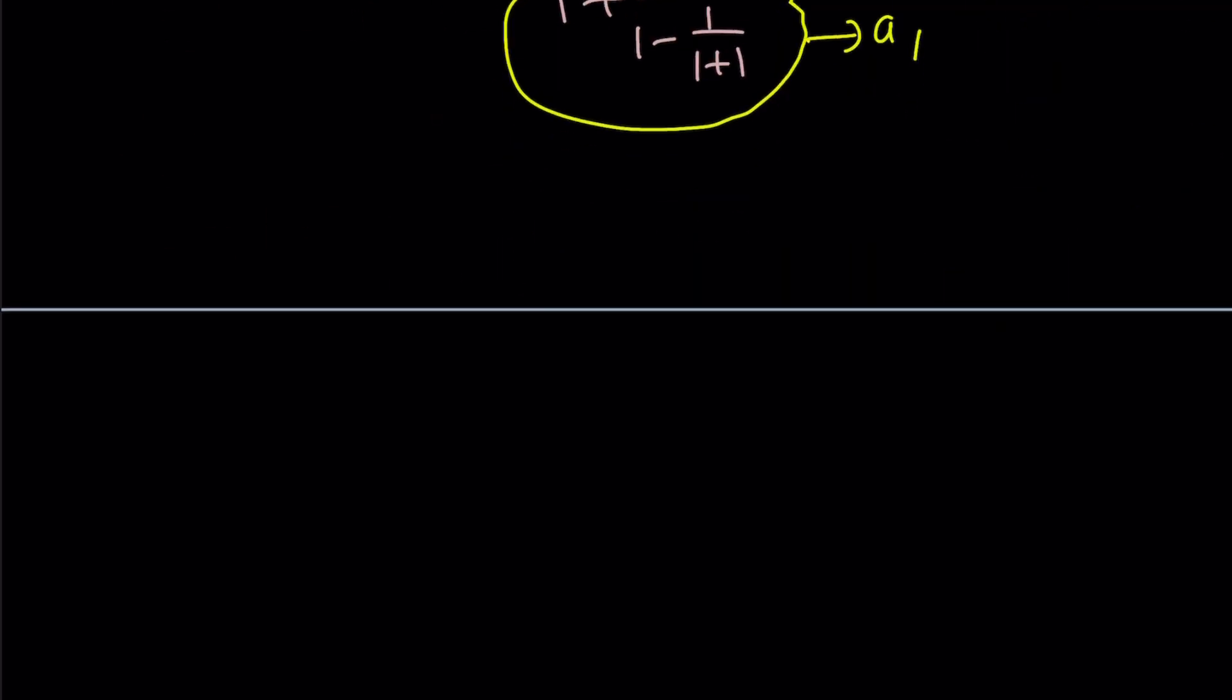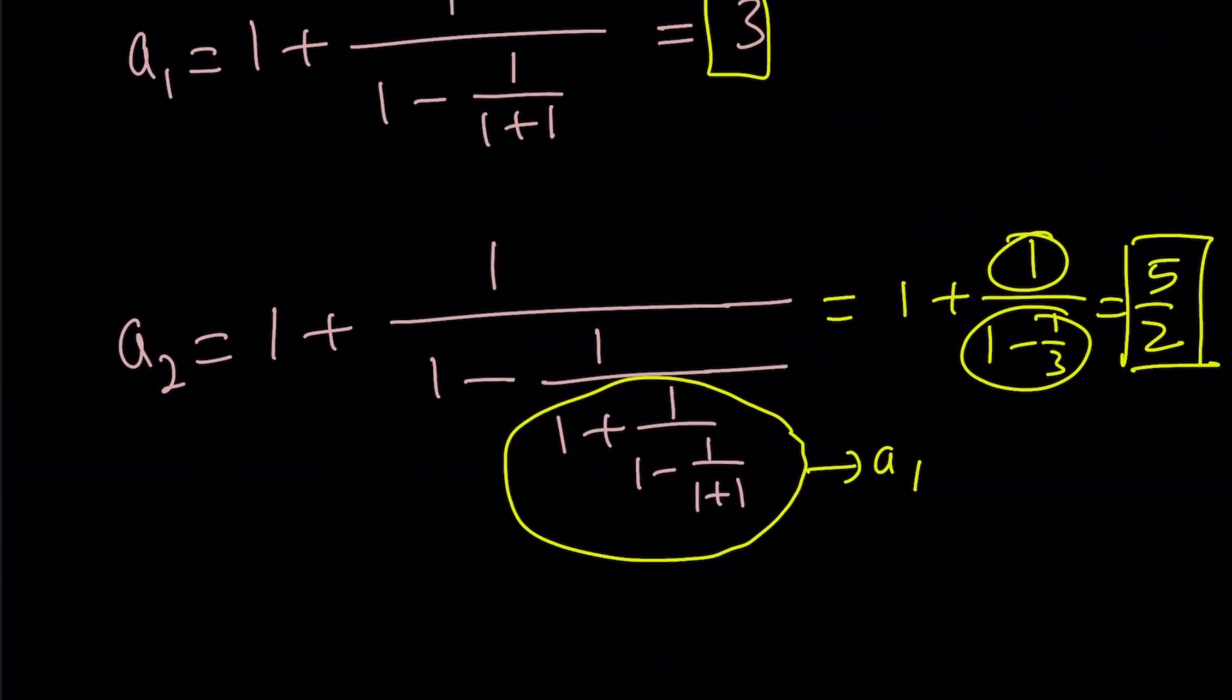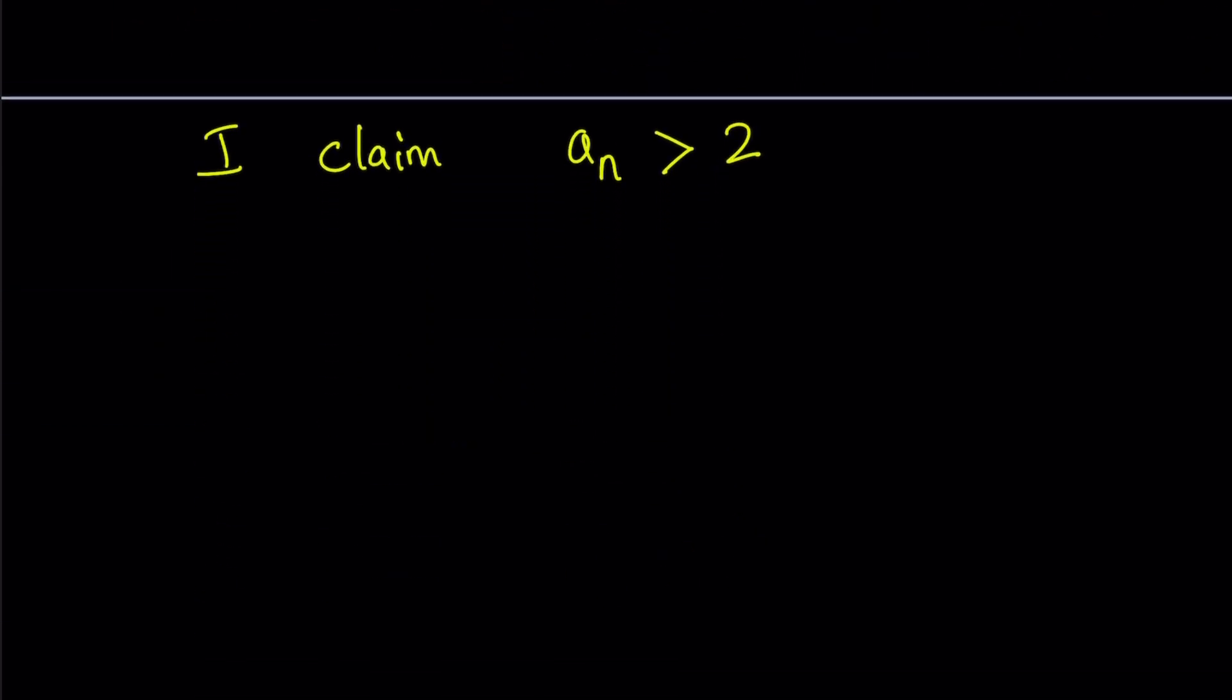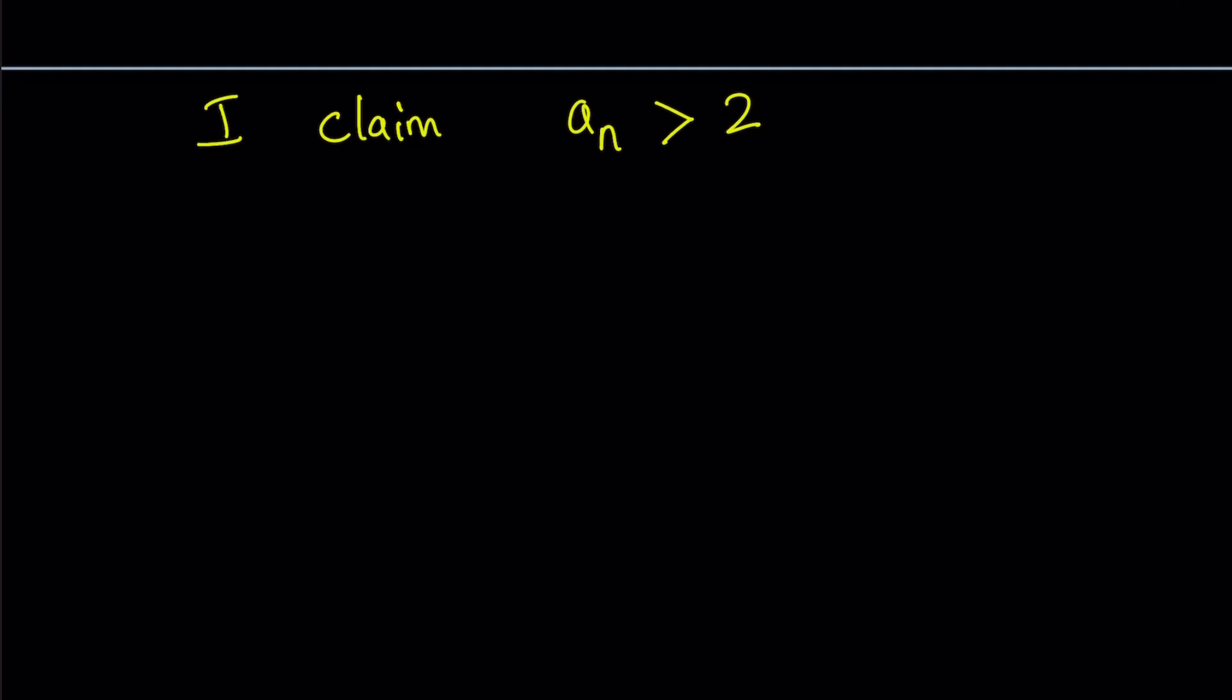First of all, I claim that a sub n the nth term is greater than 2. By the way, what I mean by the nth term is, if you do it n times, you're going to get a sub n. How do I prove this? Well, first of all, check a sub 1. a sub 1 is 3 and that's greater than 2. Great. So our base case is established.